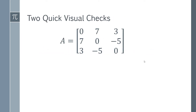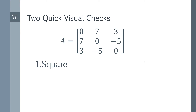You can actually use two quite simple and quick visual checks to see if a matrix has a chance of being skew symmetric. Firstly, in order to be skew symmetric you must have a square matrix. Non-square matrices are never going to be skew symmetric, so if it's non-square just immediately say it's not skew symmetric.